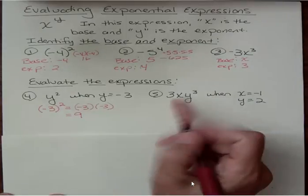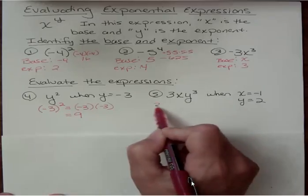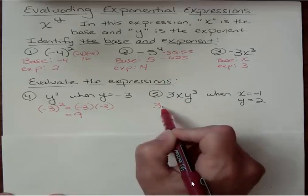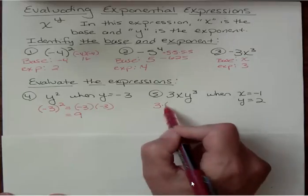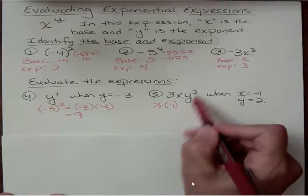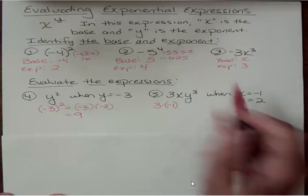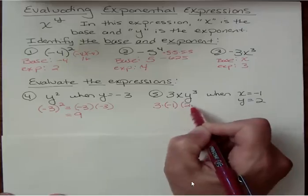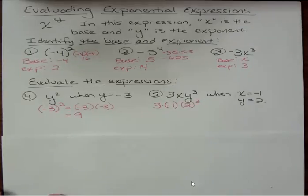Okay, the second one, or number 5 in our progression here, we have 3. This means times, even though we don't see it, we have 3 times x, which is negative 1. So I'm going to put parentheses so it doesn't look like 3 minus 1. And then we have y to the third power, and our y is 2. So y is just 2, so that's going to look like 2 to the third power.